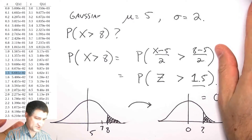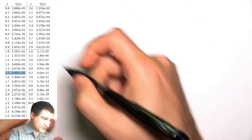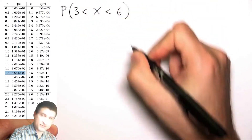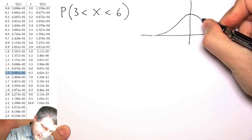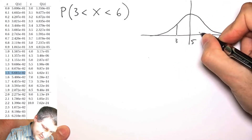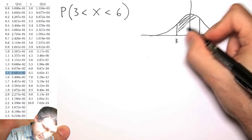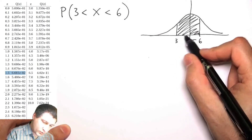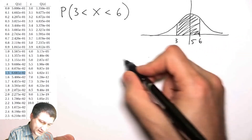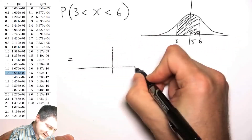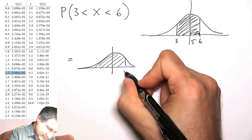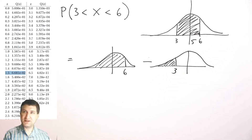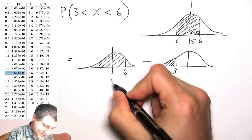I can also use this to compute probabilities over arbitrary intervals. Using the same Gaussian with mean five and sigma equals two, I want to know the probability that X is in the range three to six. Drawing the picture, the mean is five, three is to the left, and six is to the right. Three is about one standard deviation away on the left and six is half a standard deviation away on the right. The probability is whatever lies between the two CDFs evaluated at those points.